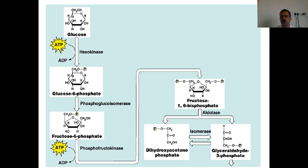Fructose-6-phosphate gets converted into fructose-1,6-bisphosphate — phosphate groups are linked at the first carbon and sixth carbon of fructose. The enzyme is phosphofructokinase, and another ATP molecule is utilized which donates the phosphate group to this point.